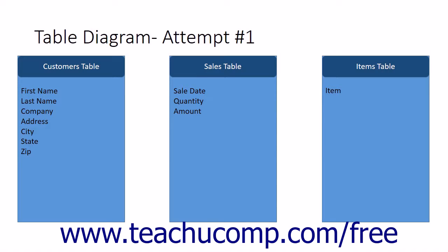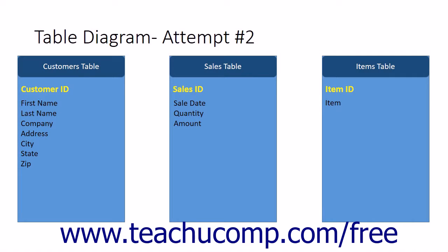If you are recording unique information like a social security number, you could use that as the primary key in your table. However, if you are not recording any type of unique information, then often you must assign your own unique values. Many companies assign customer ID numbers to uniquely identify each customer. In the current data model, there isn't any information that would uniquely identify each record in the customers table, so you could add a customer ID field. Similarly, you would add a sales ID column to the sales table and an item ID field to the items table. The primary key field is shown in bold within each table diagram.